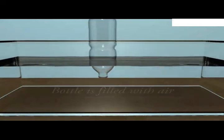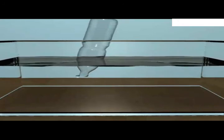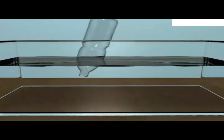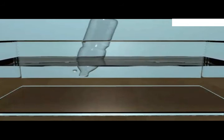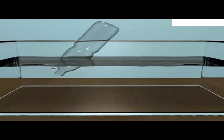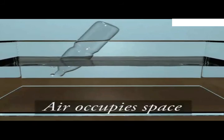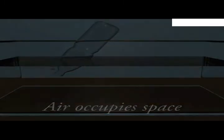Now tilt the bottle slightly and observe — air in the form of bubbles starts coming out of the bottle. Water now enters the bottle to fill up the empty space created by the escaping air. This activity shows that air occupies space.